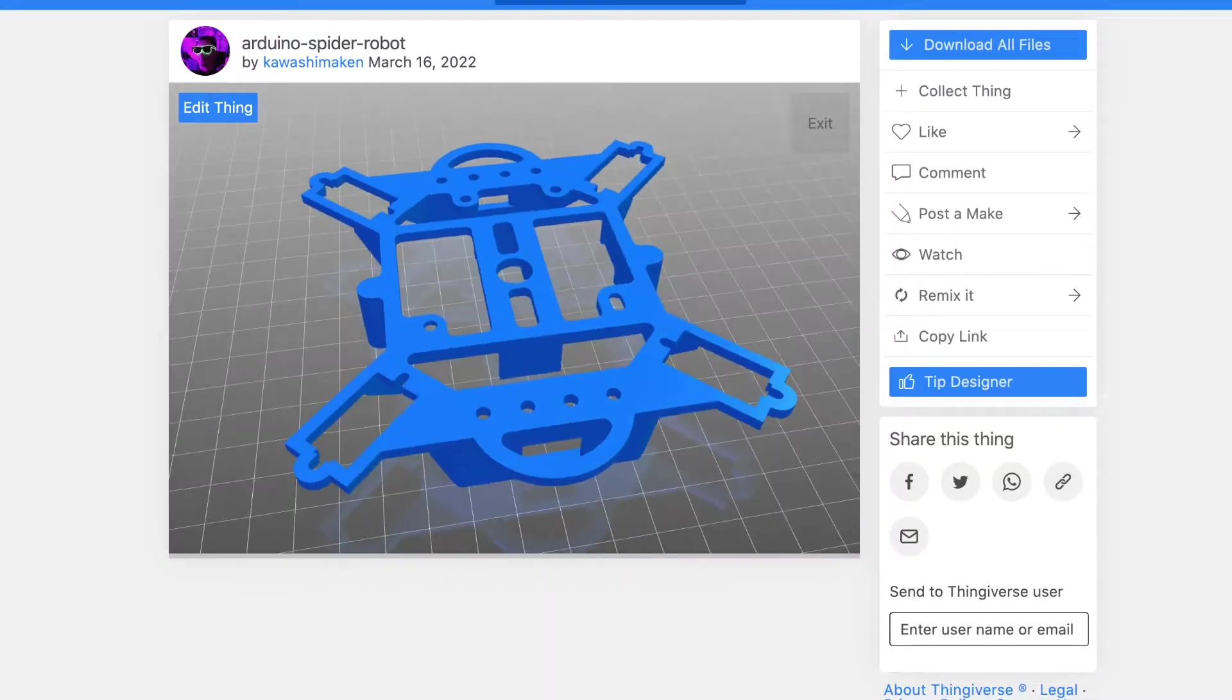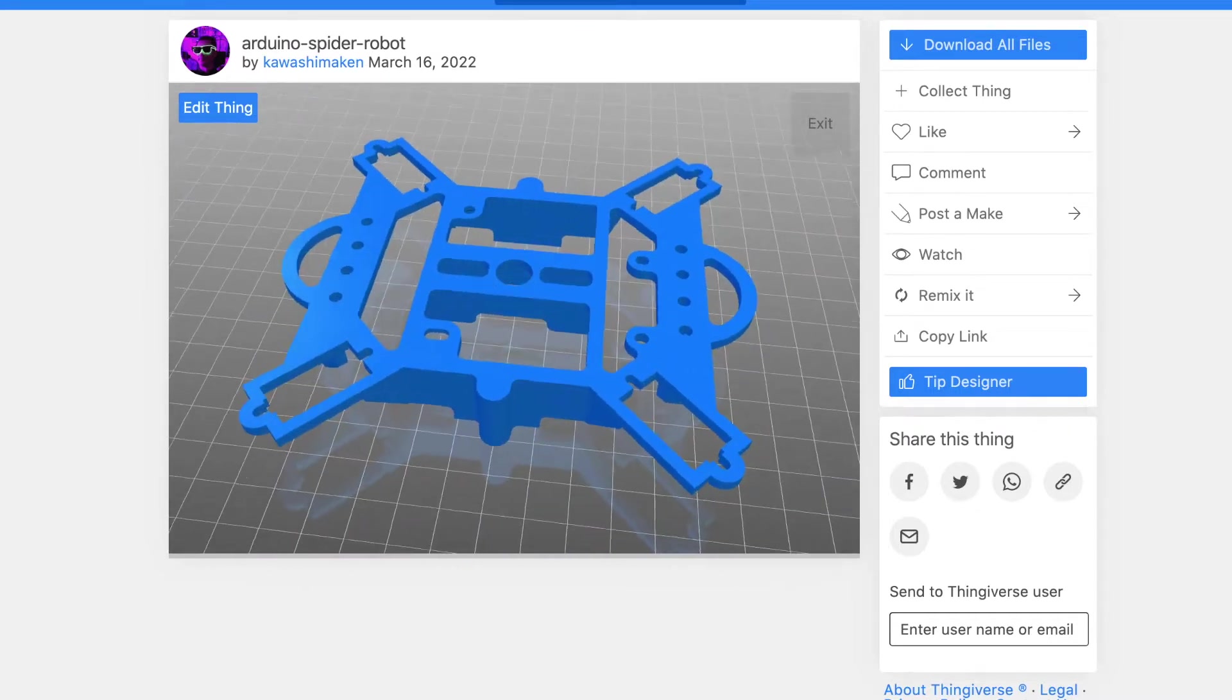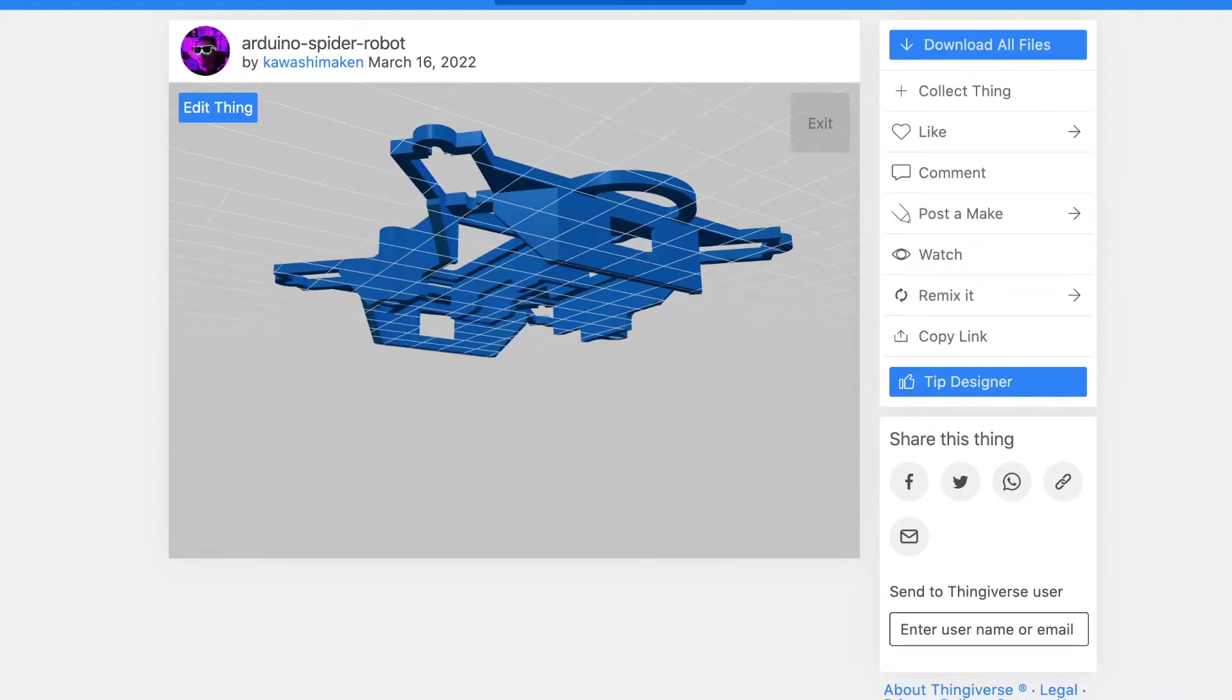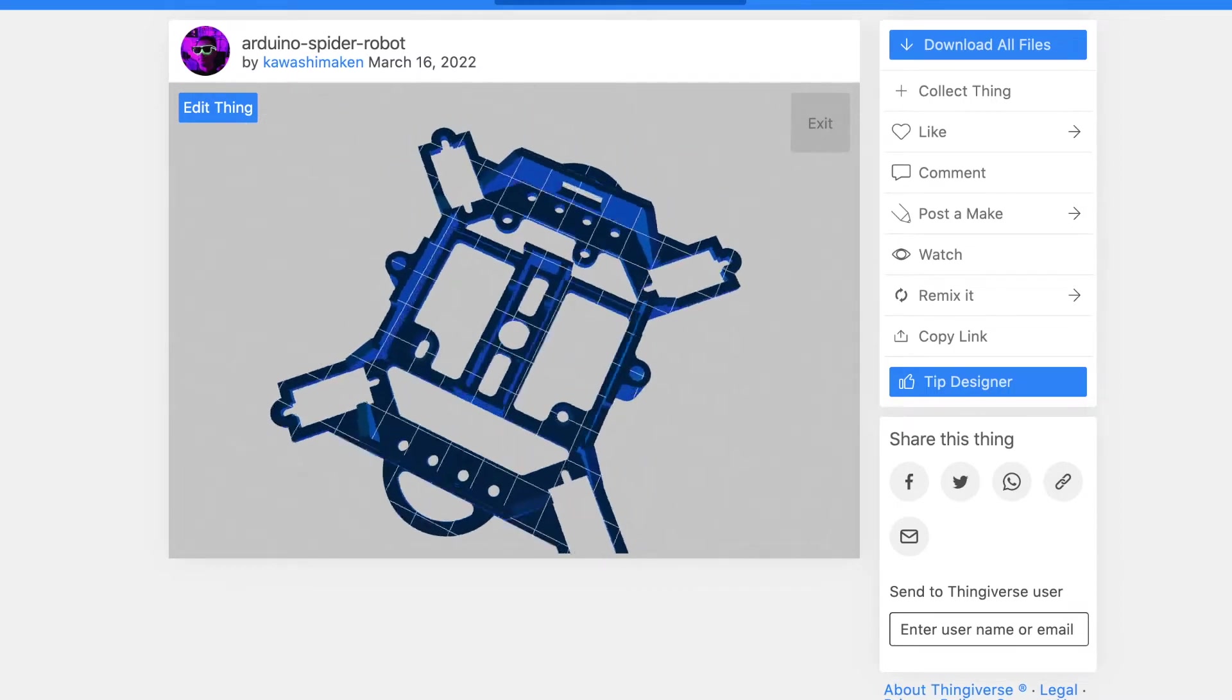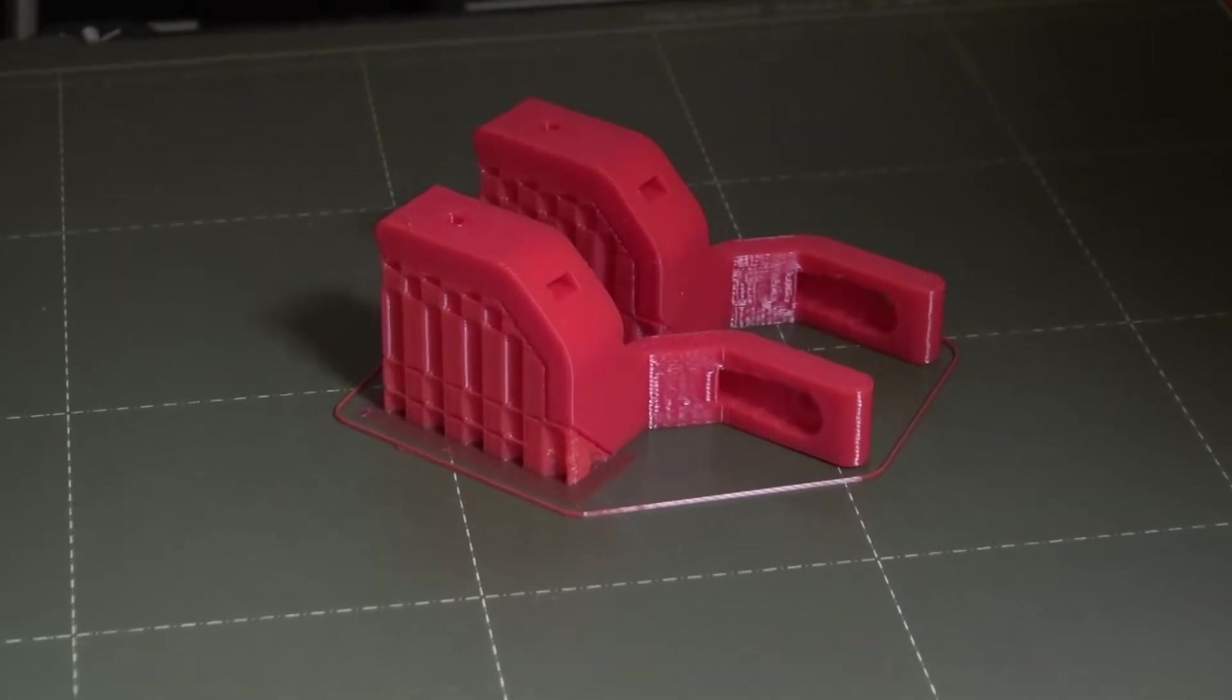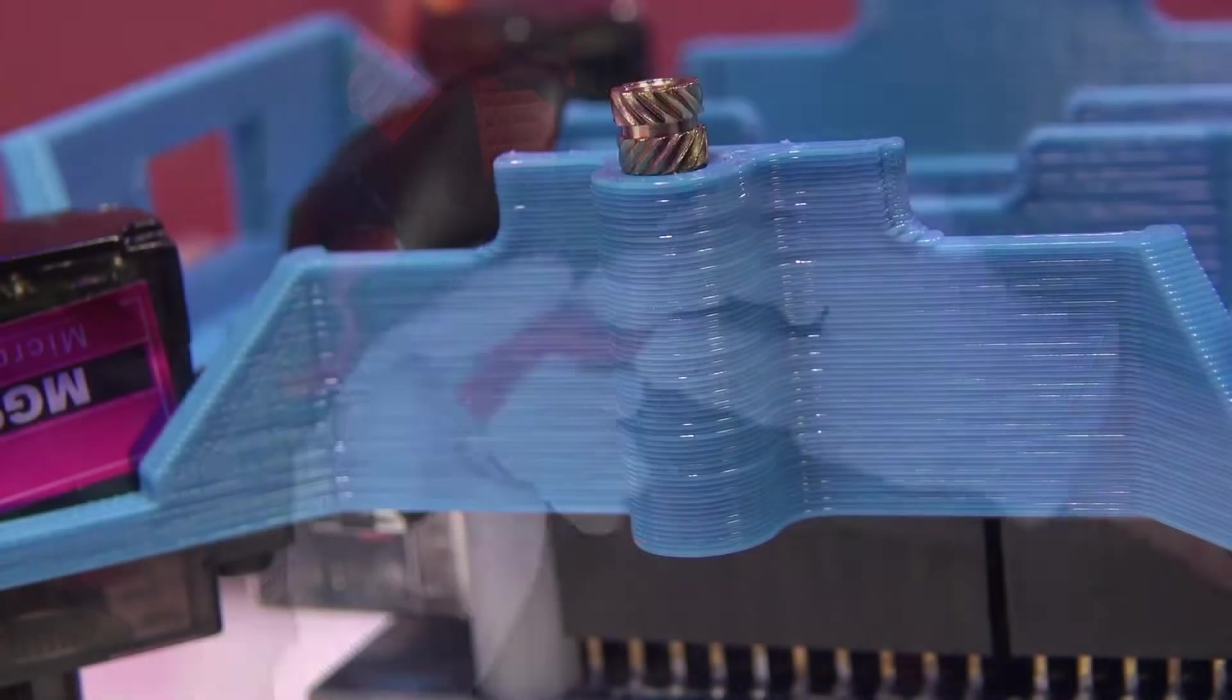Here is the good news. I'm going to share the STL files with all the viewers. You can find them on Thingiverse. There will be a link in the video description. If you like to make your own spider, please give it a shot. If you have a 3D printer, it would be fun to build your own. Program it and make it walk as you like.